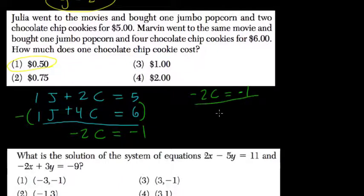How do you solve? Well, divide both sides by negative 2 and C equals 1 half or $0.50, which is our answer here.